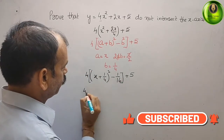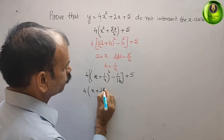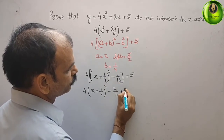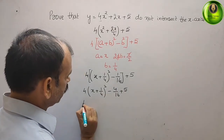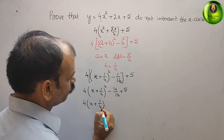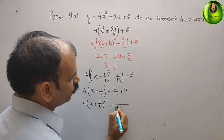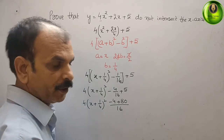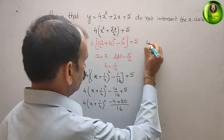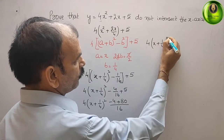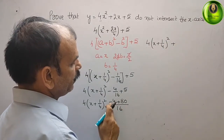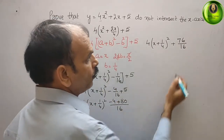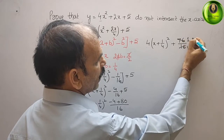Opening the big bracket, we get 4[(x + 1/4)² − 1/16] + 5, which gives 4(x + 1/4)² − 4/16 + 5. Taking the LCM as 16, we get minus 4 plus 80 over 16. Solving: 4(x + 1/4)² + 76/16, and dividing by 4 gives 4(x + 1/4)² + 19/4.